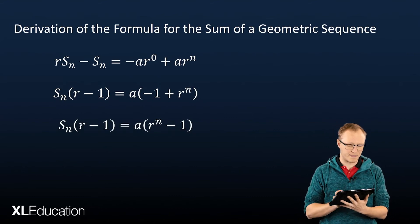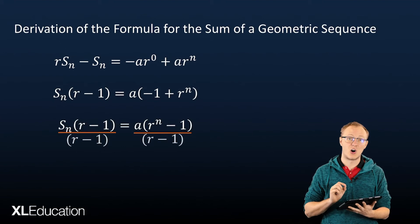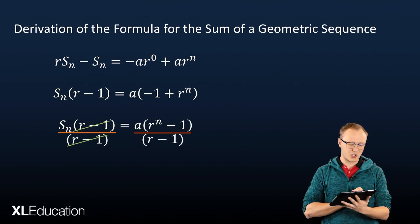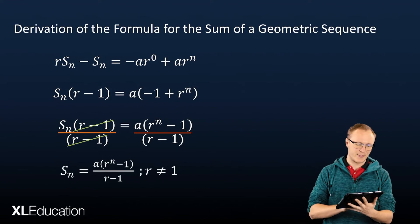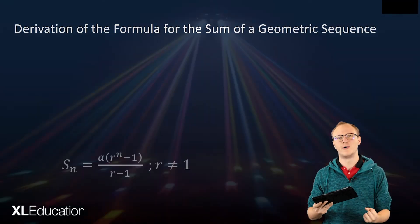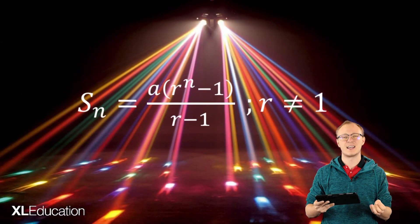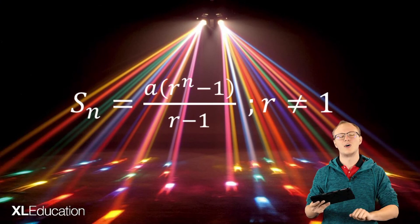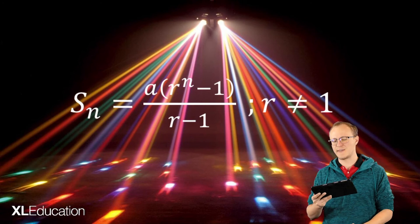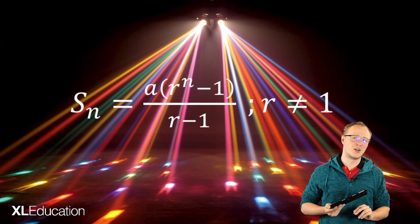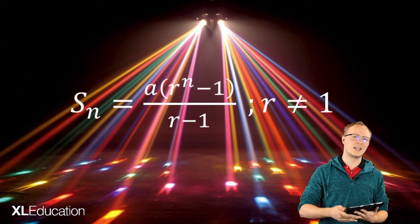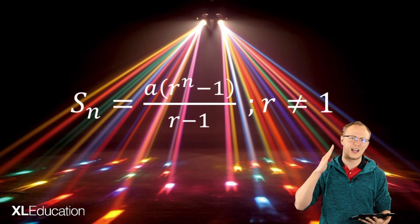Then all we do is divide both sides by r minus 1. And when we do that, we actually find that we get that formula that we've been looking for. So then we get Sn is equal to a times r to the n minus 1 divided by r minus 1. And there's a little caveat there: r cannot be equal to 1, because if it is, you will be dividing by zero, and that's illegal and unethical.